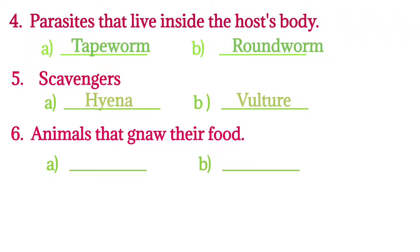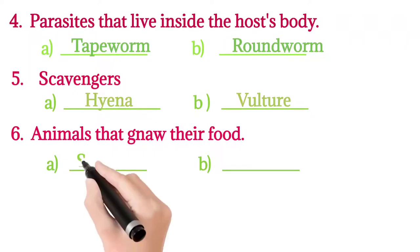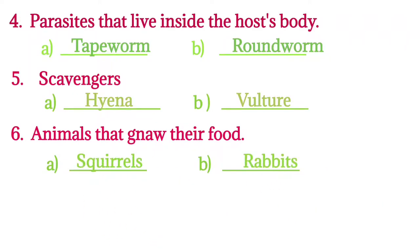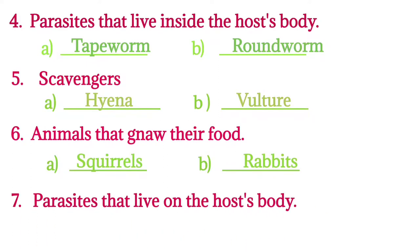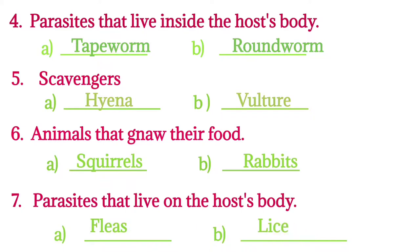Six: animals that gnaw their food. Answers: squirrel, rabbits, rats, etc. They have sharp and long front teeth to gnaw nuts, seeds, and fruits. Seven: parasites that live on the host's body - mosquitoes, fleas, lice, etc.